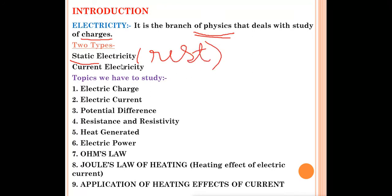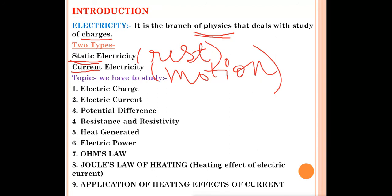Static electricity is a branch of electricity in which charges are at rest. Current means motion, so current electricity is a type of electricity in which charges are in motion. For example, if you take a glass scale, rub it on your hair, and bring it close to pieces of paper, the scale will attract those papers — that is an example of static electricity where charges are fixed at a point. In current electricity, charges flow from one place to another.